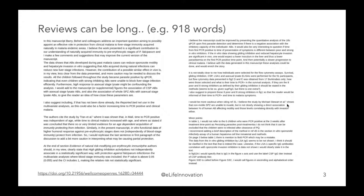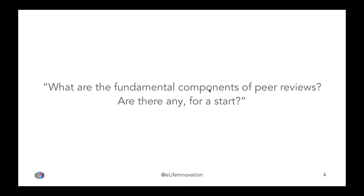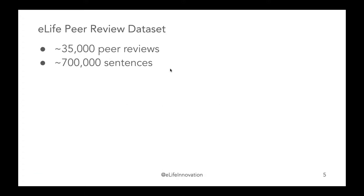For example, if a review is more about impact, that may not change the validity of the manuscript, or it's just small text changes. The main question Alessio asked was: what are the fundamental components of a peer review? Initially he worked with the eLife dataset, which has about 35,000 peer reviews, and he split that into 700,000 sentences. He used standard topic modeling called LDA, which works best when the dataset is not huge — in our case, probably working quite well.